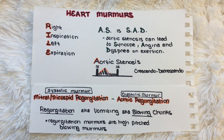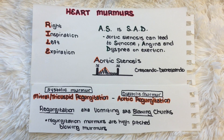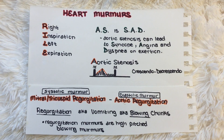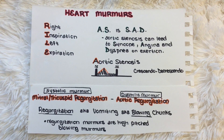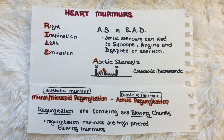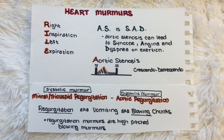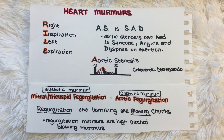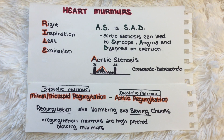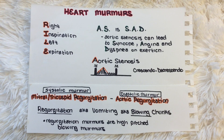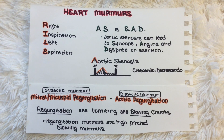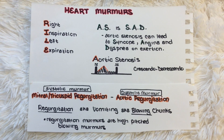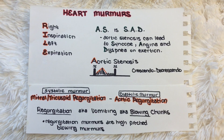Lastly, we have the regurgitative murmurs. Mitral and tricuspid regurgitation are systolic murmurs, while aortic regurgitation is a diastolic murmur. Regurgitation murmurs are often described in question stems as blowing murmurs. You can remember this because regurgitation is sometimes considered vomiting, and another phrase for vomiting is 'blowing chunks.' So: regurgitation, aka vomiting, aka blowing chunks — regurgitation murmurs are high-pitched blowing murmurs. The stem will specify systolic or diastolic to help you identify whether it's aortic, mitral, or tricuspid regurgitation.